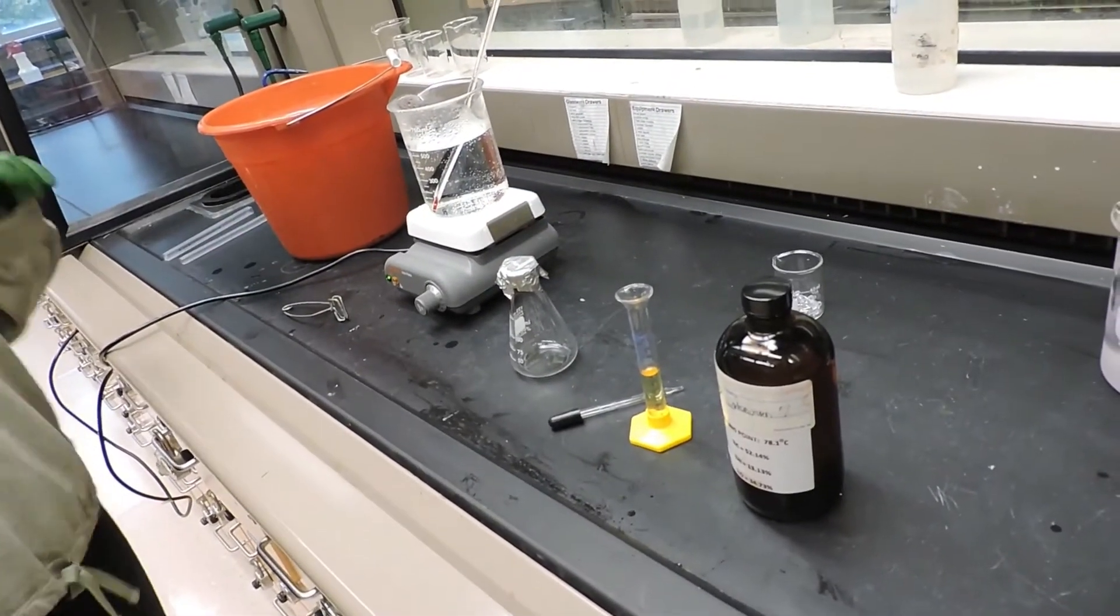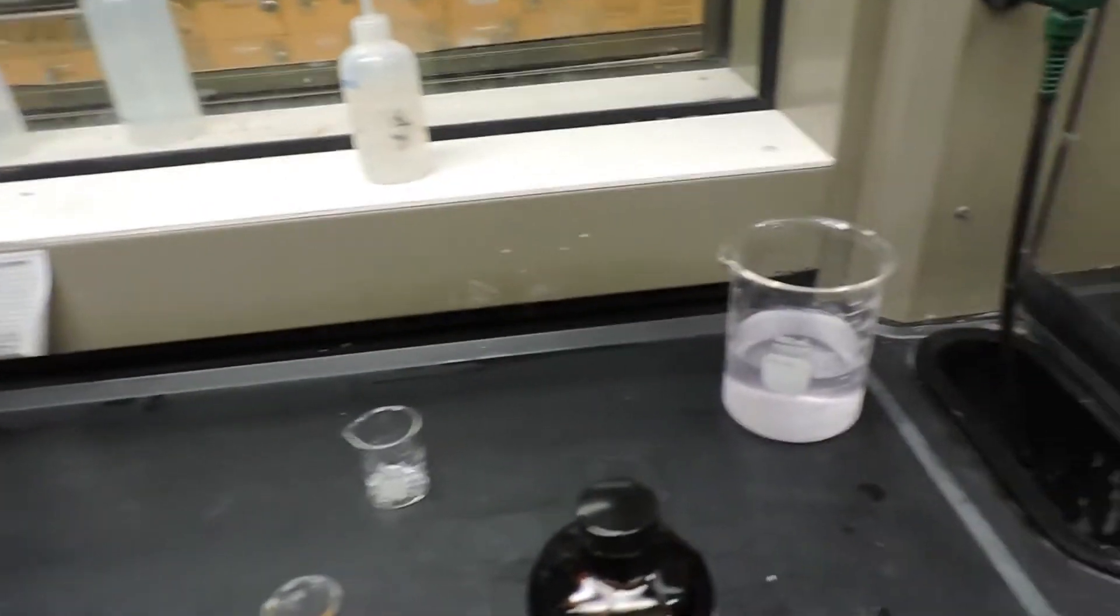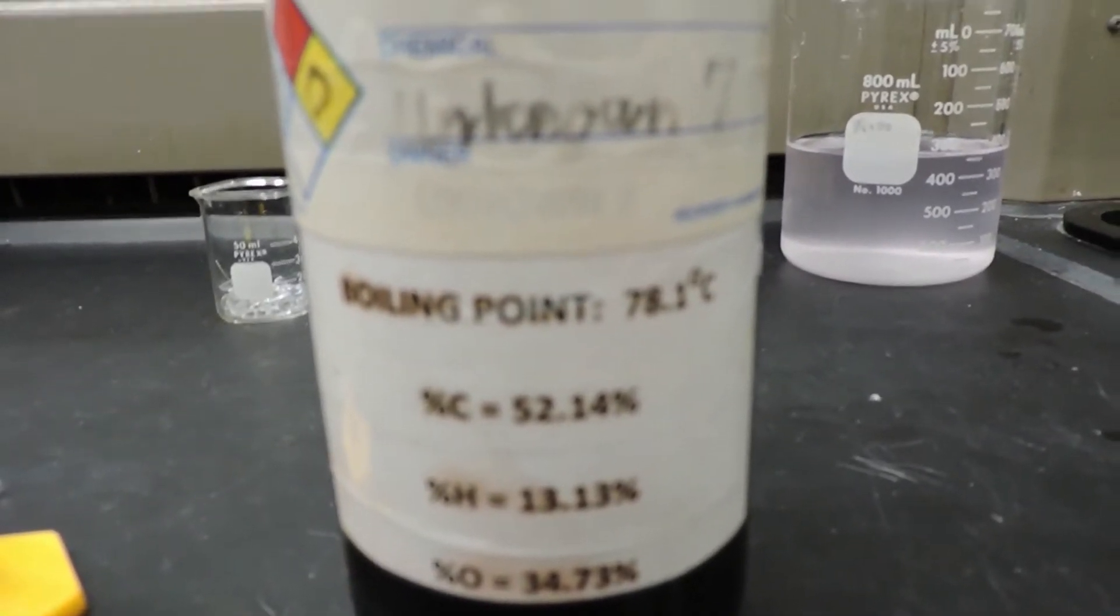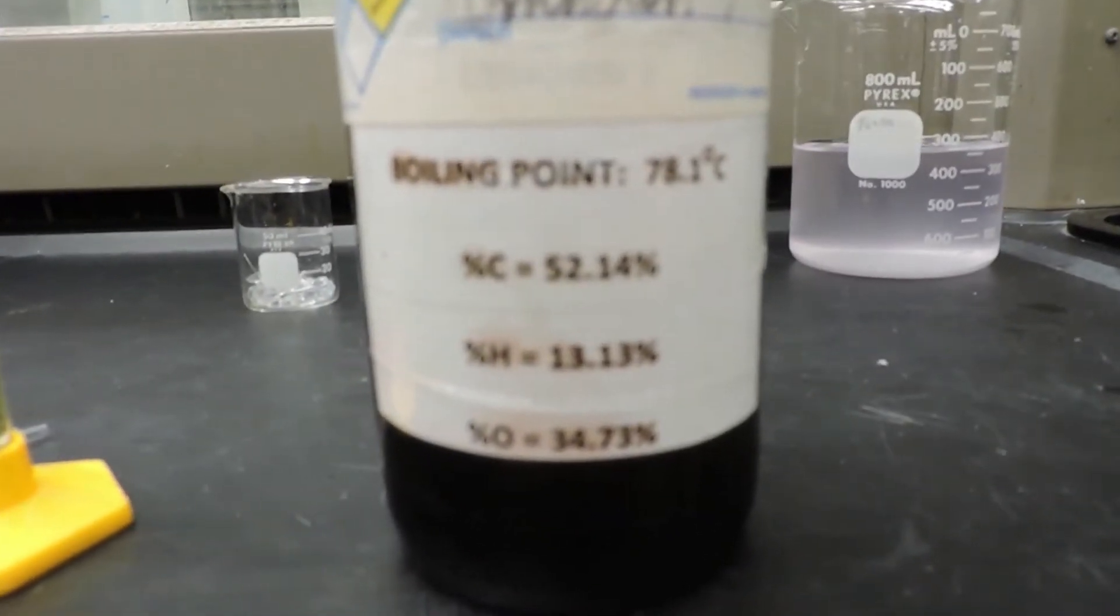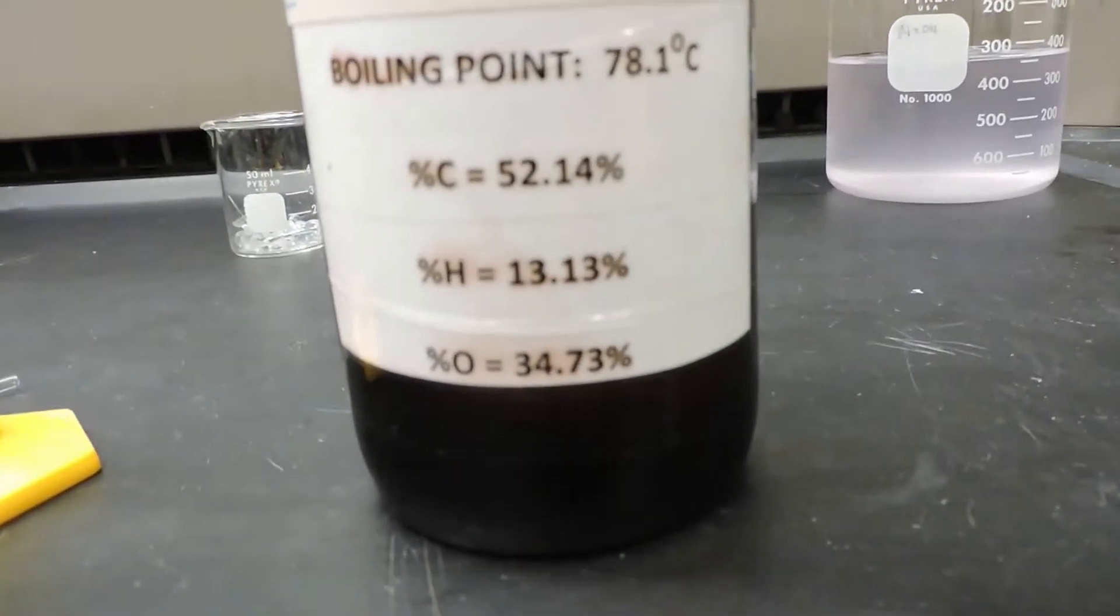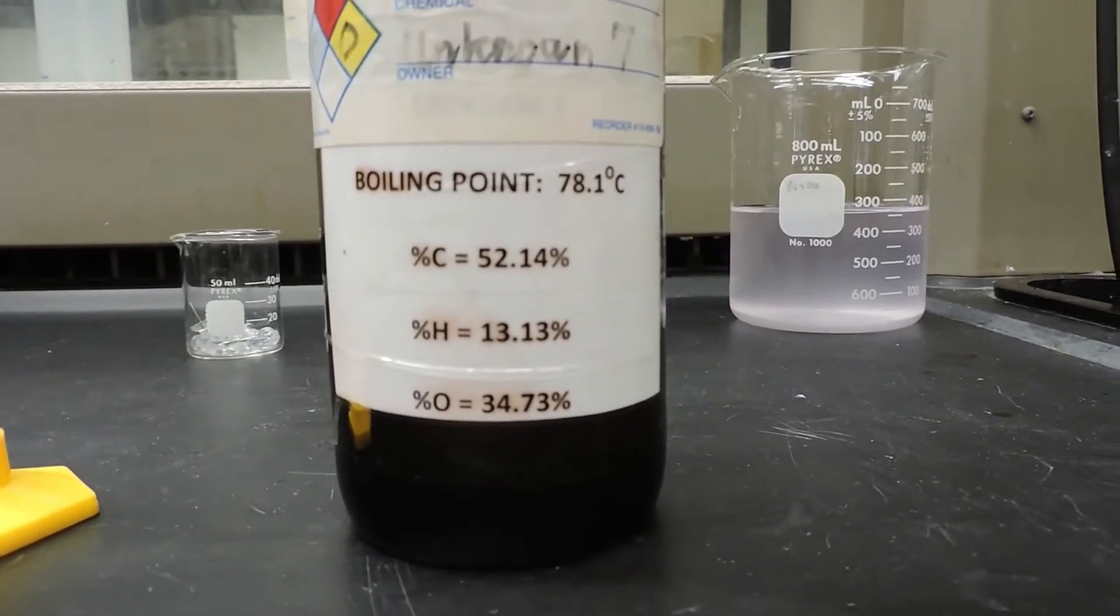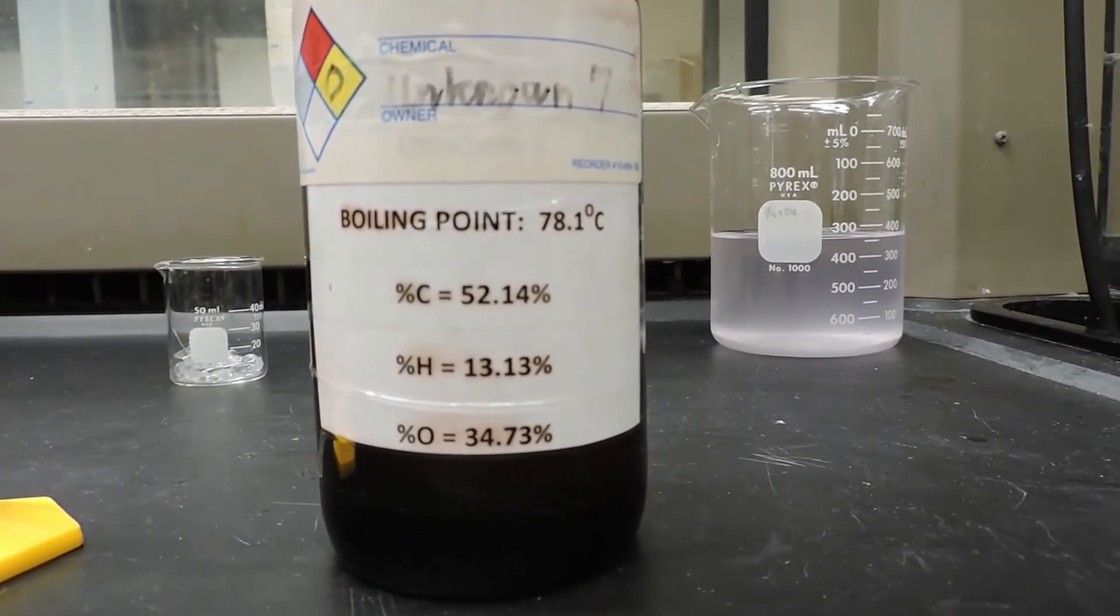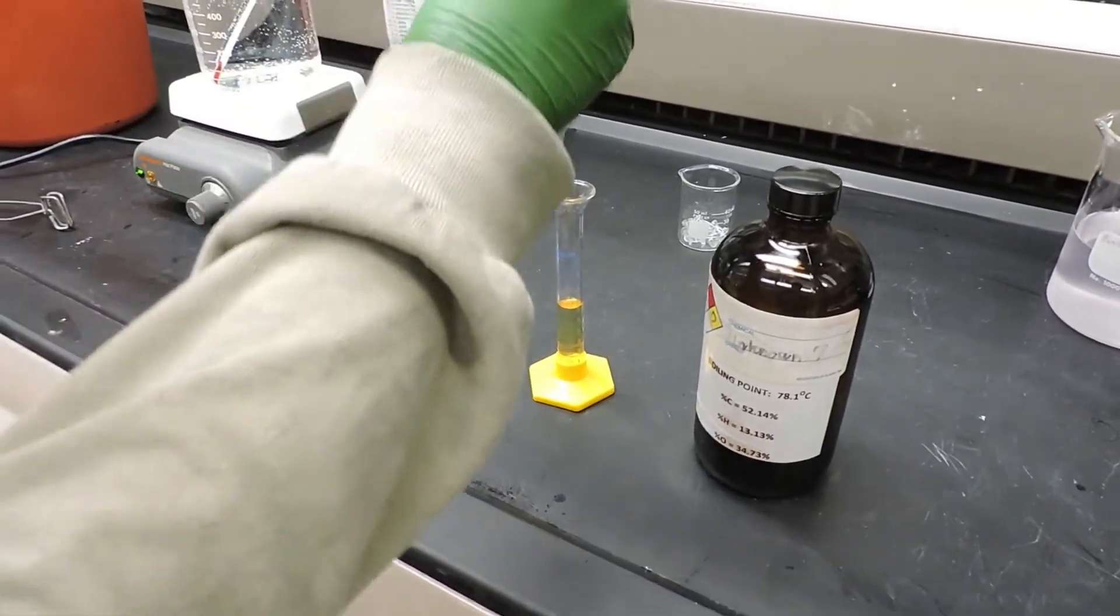With our heated water bath on a hot plate, we're going to use a 10 milliliter graduated cylinder to measure and pour out approximately 6 milliliters of our unknown liquid. The unknown liquid is unknown number 7 with a boiling point of 78.1 degrees Celsius and molecular components of 52.14% carbon, 13.13% hydrogen, and 34.73% oxygen. We'll take our unknown liquid and introduce it to our pre-weighed Erlenmeyer flask.